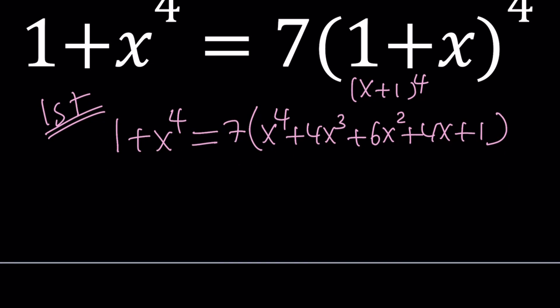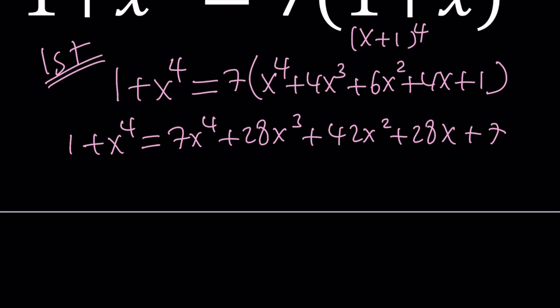Now, let's go ahead and distribute the 7 and turn this into a full quartic. I was going to say quadratic, but it's quartic. 7x to the 4th plus 28x to the 3rd plus 42x squared plus 28x plus 7.